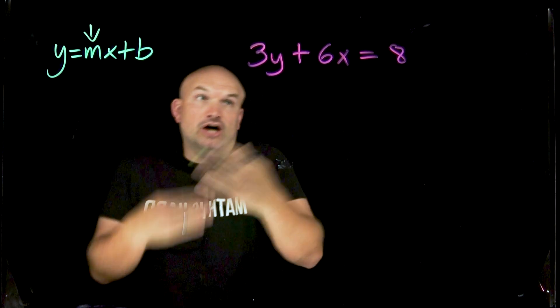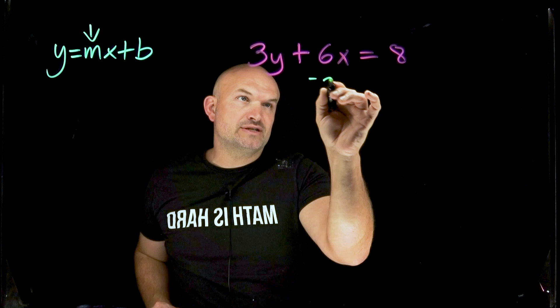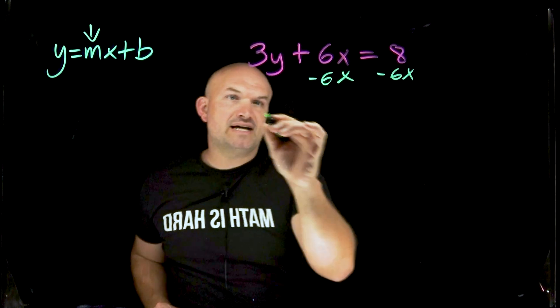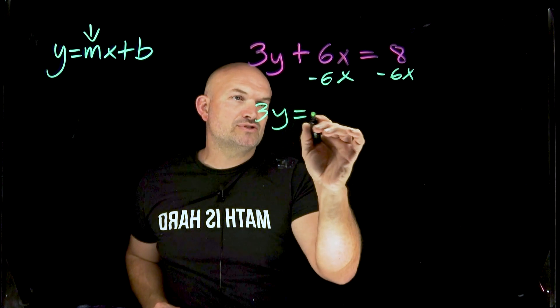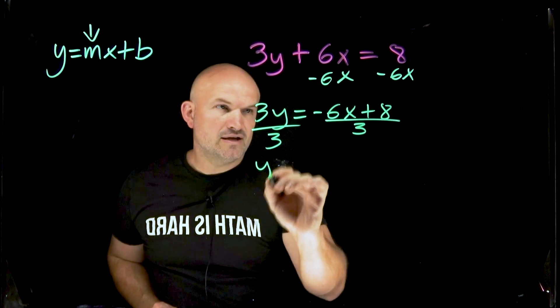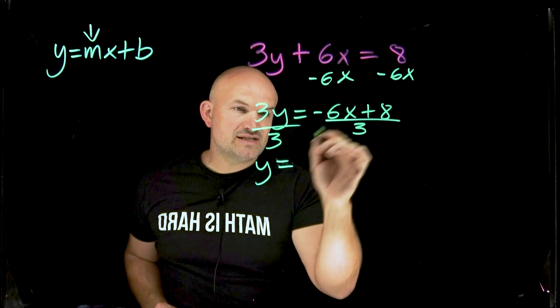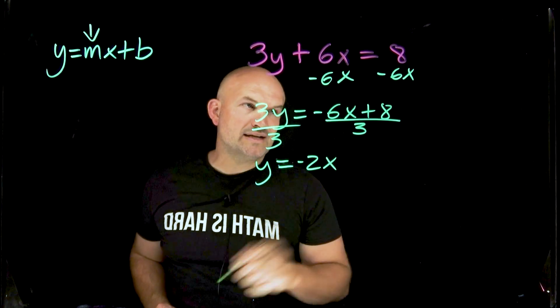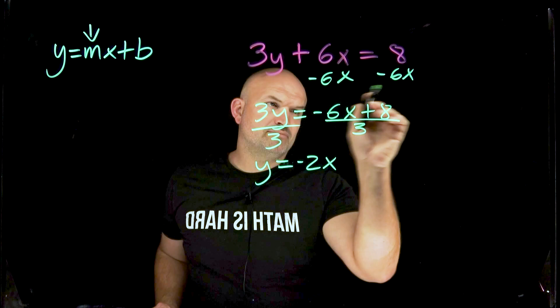So to go ahead and solve all I need to do is undo what's happening to our y. So I'm going to subtract 6x on both sides and then I get 3y equals negative 6x plus 8, divide by 3 on both sides. Negative 6 is divisible by 3 that's going to be negative 2x and then we have plus 8 thirds.